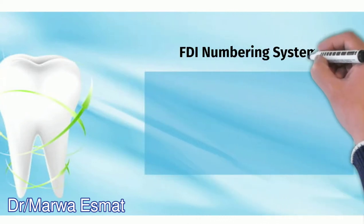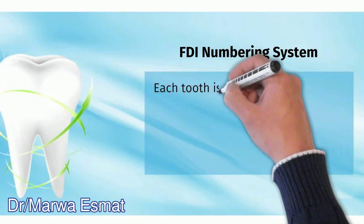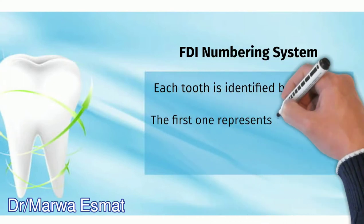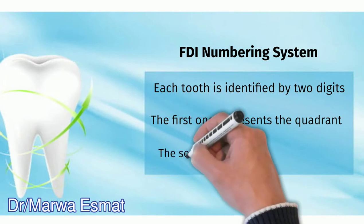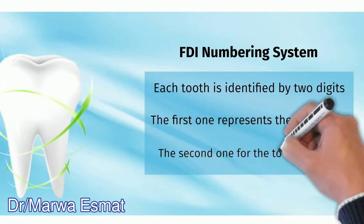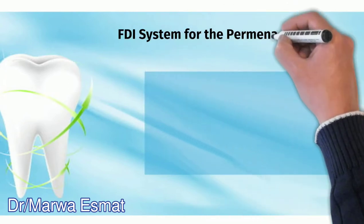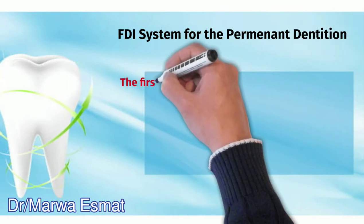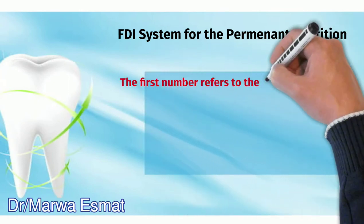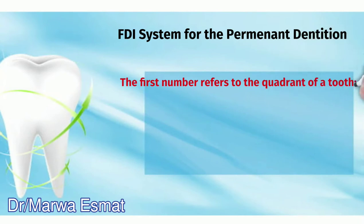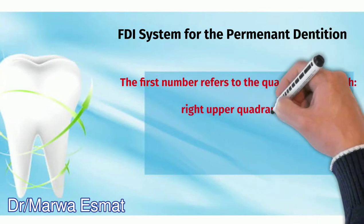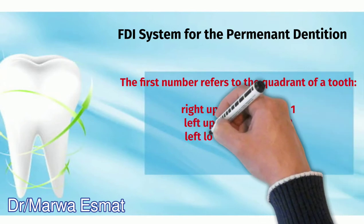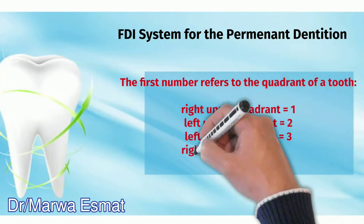In this numbering system, each tooth is identified by two digits. The first one represents the quadrant and the second one represents the tooth itself. The first number for the permanent dentition ranges from 1 to 4: upper right quadrant 1, left upper quadrant 2, left lower quadrant 3, right lower quadrant 4.